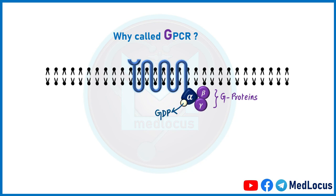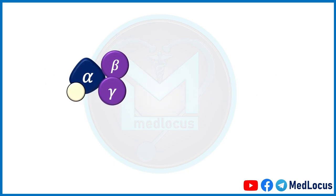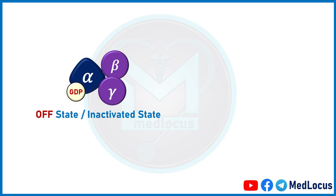In the resting state, G-proteins exist as an alpha-beta-gamma trimer, and GDP is bound to the alpha subunit. The G in G-proteins stands for GTP, because they are bound to either GTP or GDP. When bound to GDP, G-proteins are said to be in the off state, or inactivated state. When the GPCR is activated by a ligand, it acts as a GEF.